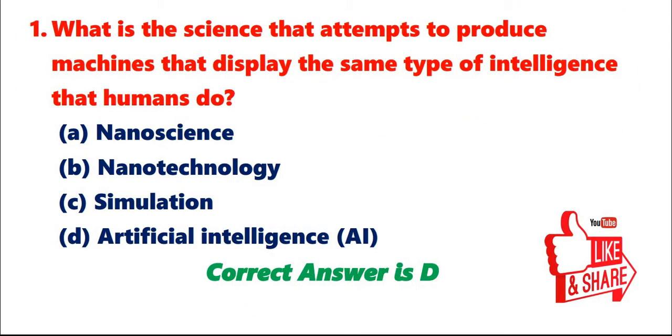Question 1: What is the science that attempts to produce machines that display the same type of intelligence that humans do? A. Nanoscience. B. Nanotechnology. C. Simulation. D. Artificial Intelligence (AI). Correct answer is D.